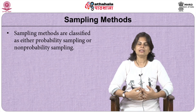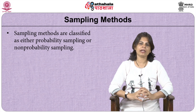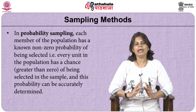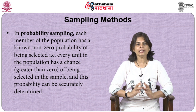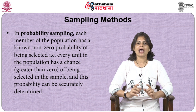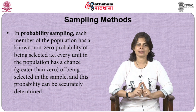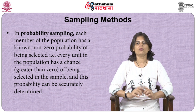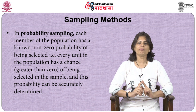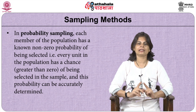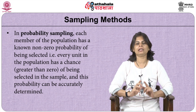Let us come to the various sampling methods. Sampling methods are classified into either probability sampling or non-probability sampling. In probability sampling, each member of the population has a known non-zero probability of being selected — that is, every unit in the population has a chance greater than 0 of being included in the sample, and this probability can always be accurately predetermined.